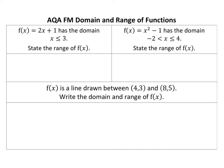Let's have a look at this first one: f(x) = 2x + 1 with domain x ≤ 3. Essentially, all I've got to do here is put f(3) in and I get 5.